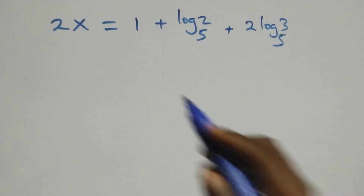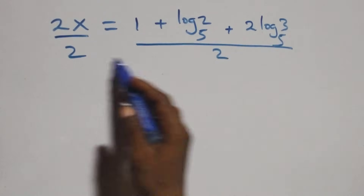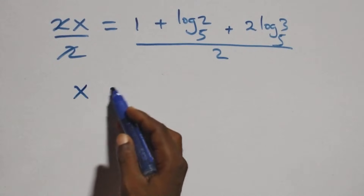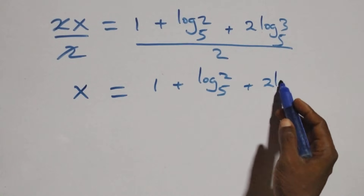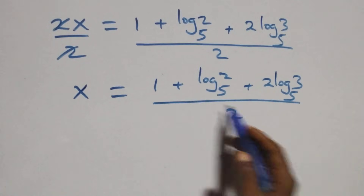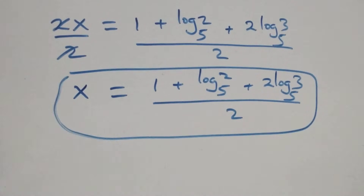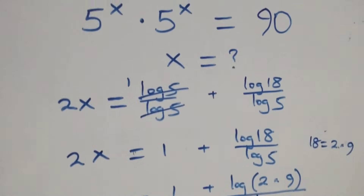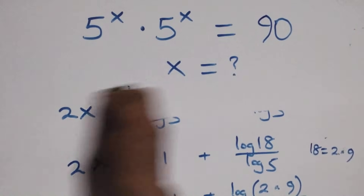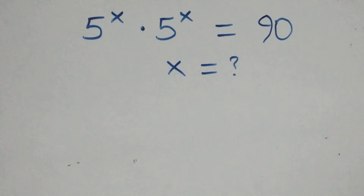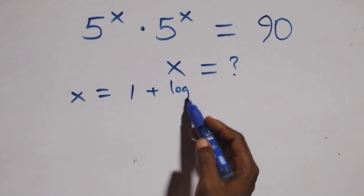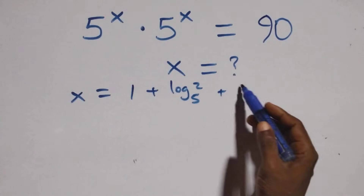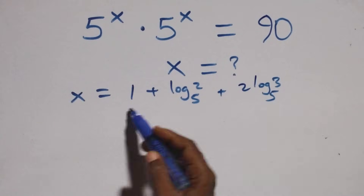Then from here we divide both sides by 2. Divide this side by 2, also divide this side by 2. The 2s cancel each other, and we have x equals (1 plus log₅2 plus 2 log₅3) all over 2. That is we have the value of x. Let's check if this satisfies the given problem by substituting the value of x.